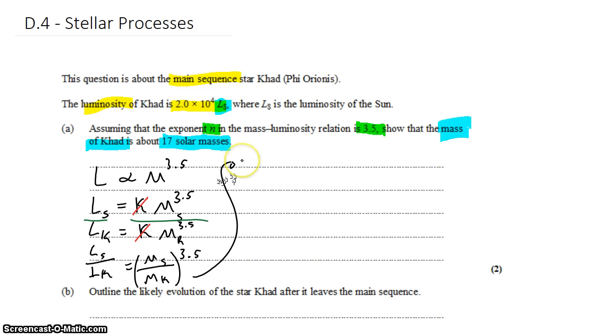So we'll take that over here now. We know the luminosity of CAD in terms of the luminosity of the sun, so we can make that substitution, which allows us to cancel the luminosity of the sun. We don't need to know what it is.